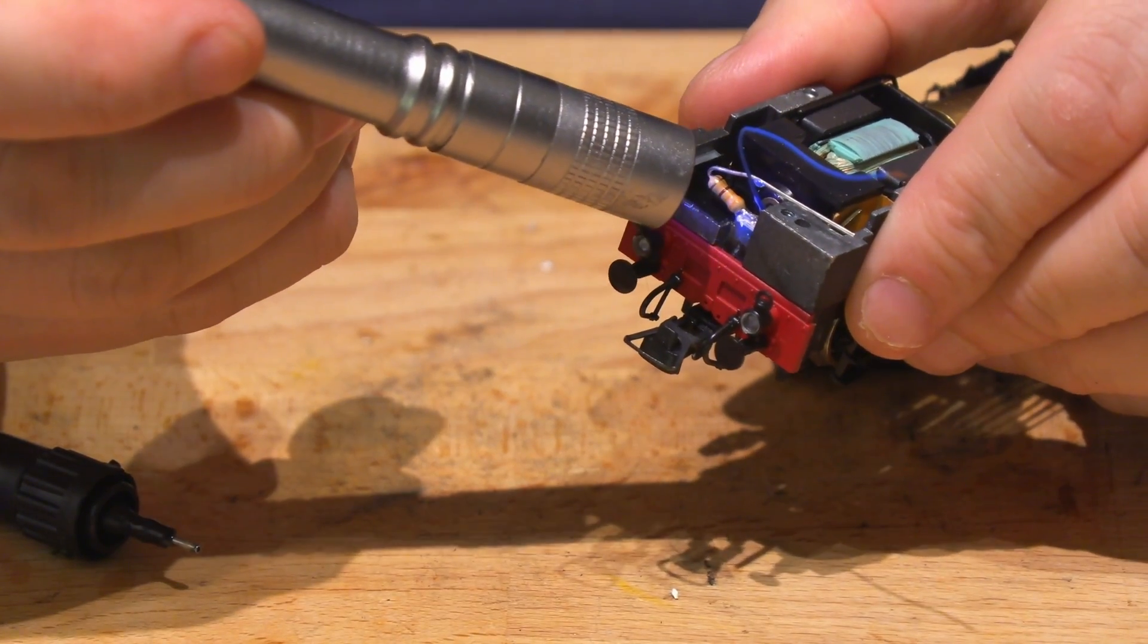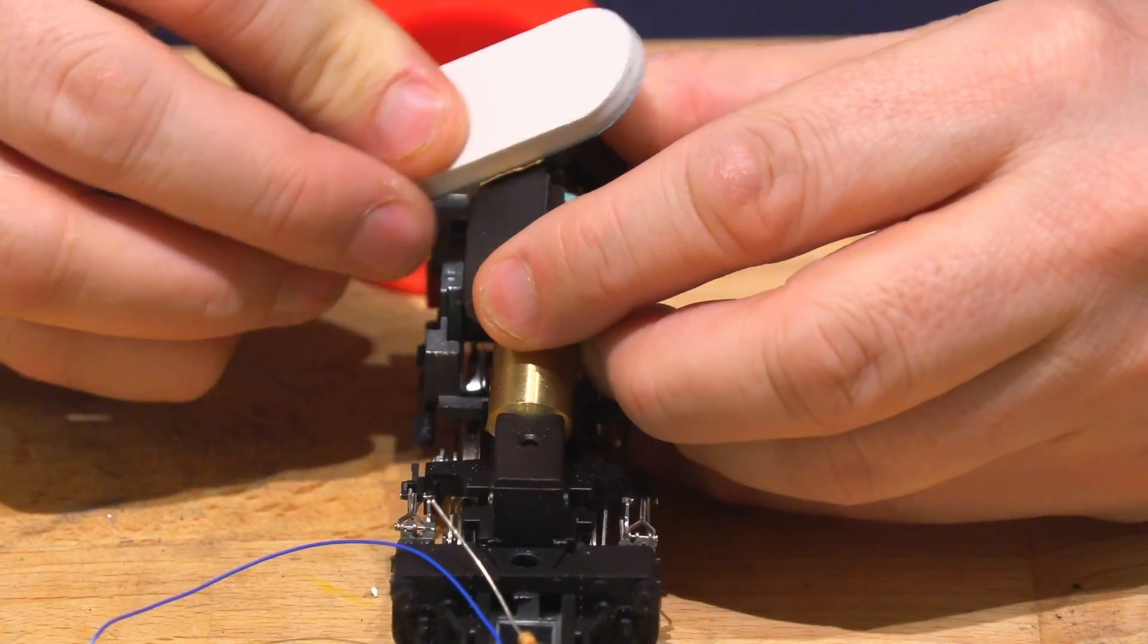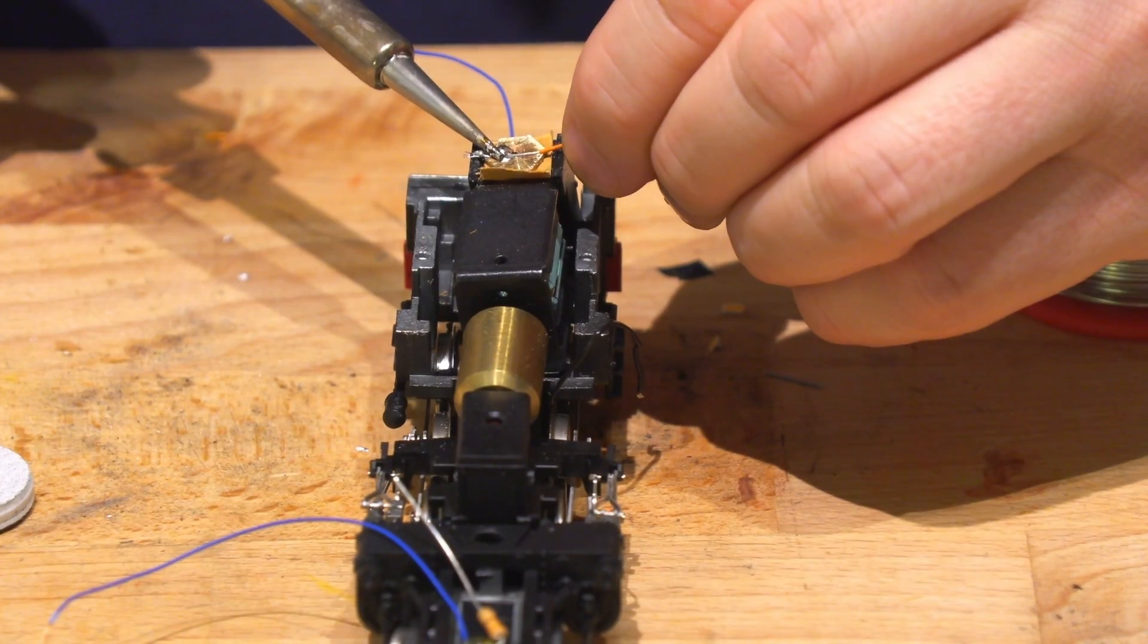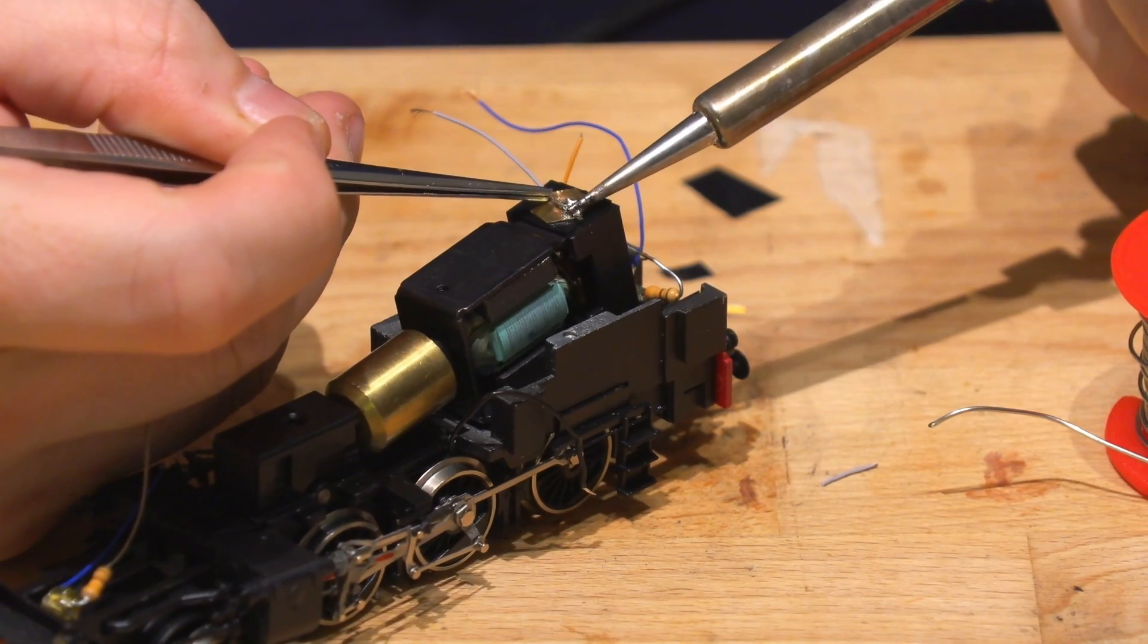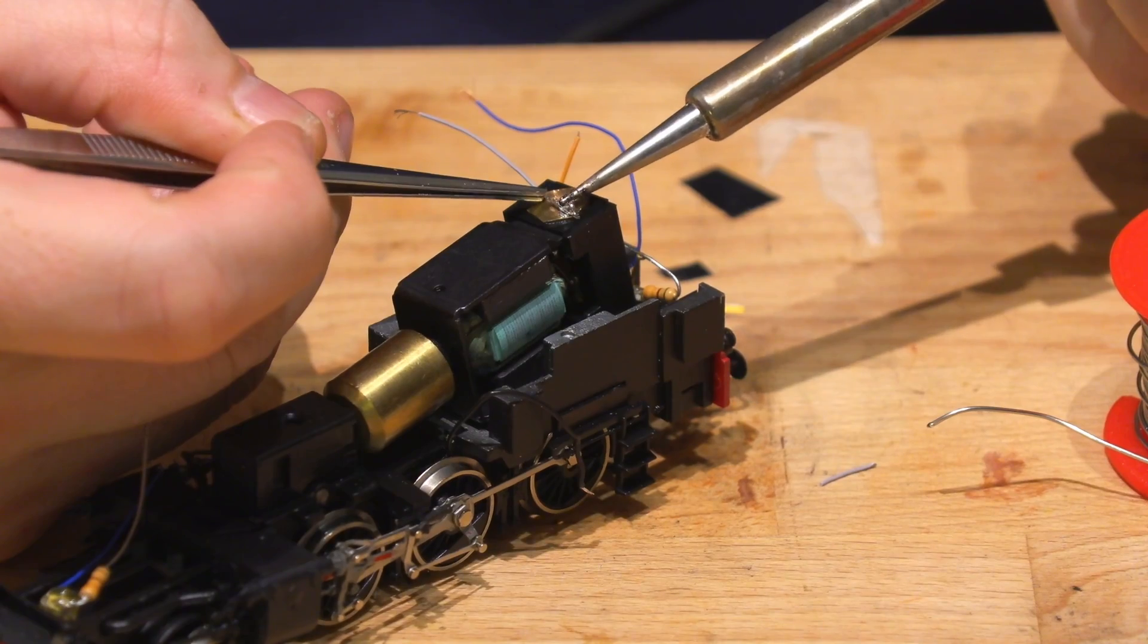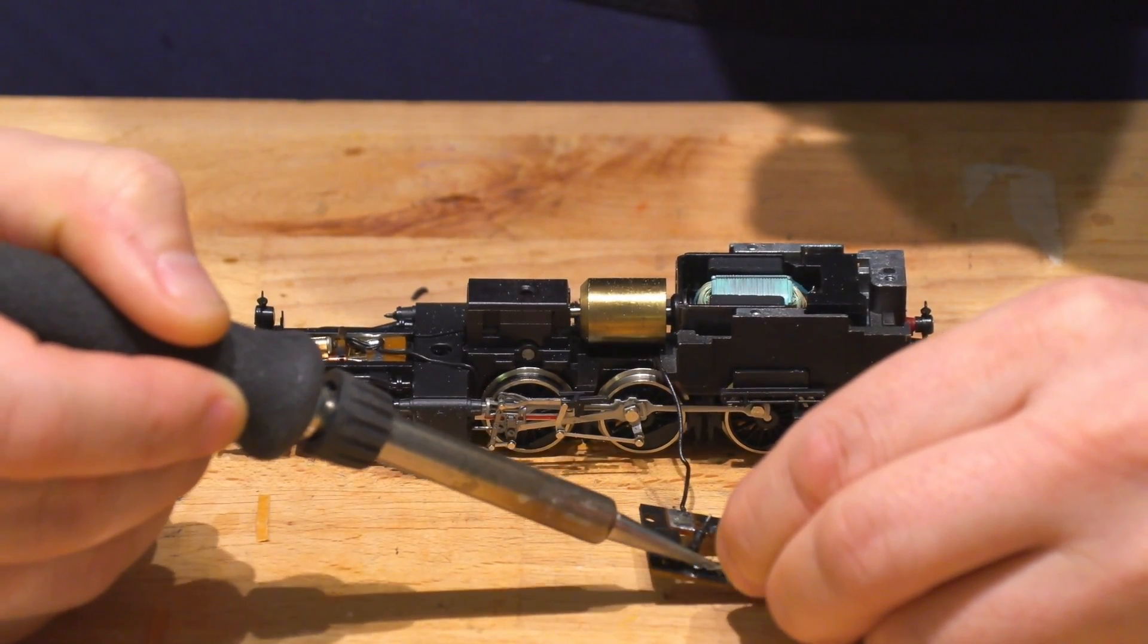Now it's time to connect everything to the decoder. We soldered the motor terminals to grey and orange wires and removed the old contact from the board. Unsolder everything from it.